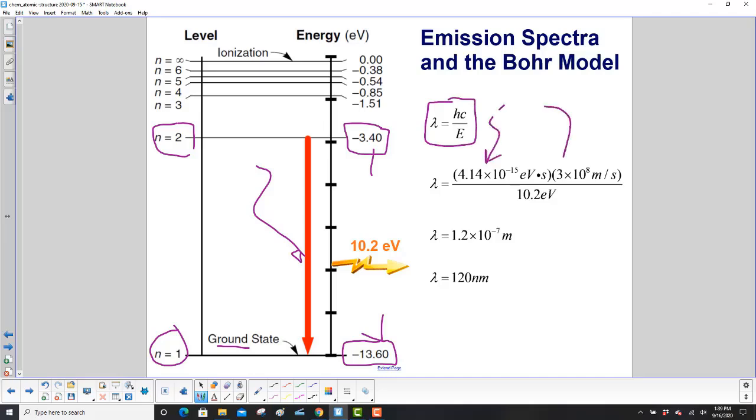The wavelength of those photons—here's our equation again. Planck's constant, speed of light, here's the energy. It's 1.2 times 10 to the minus 7 meters. But light wavelengths are often given in nanometers. So you move the decimal over 2 to the right, and you get 120 times 10 to the minus 9 meters, or 120 nanometers.